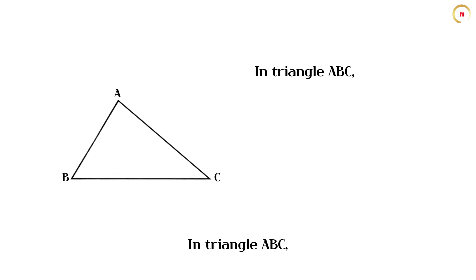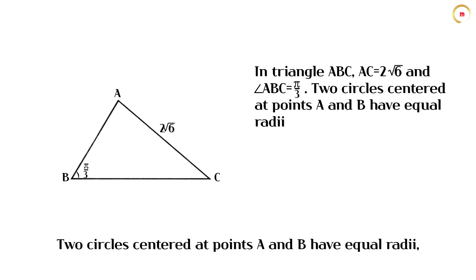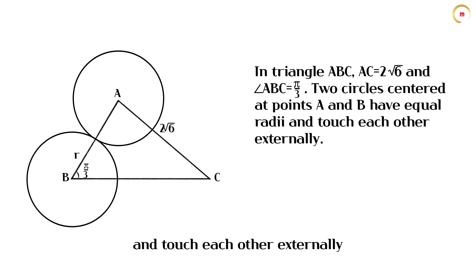In triangle ABC, the length of AC is 2√6, and angle ABC is π/3. Two circles centered at points A and B have equal radii and touch each other externally.